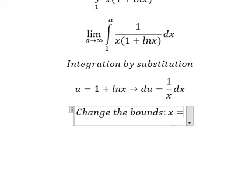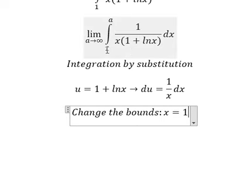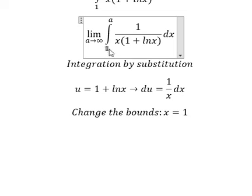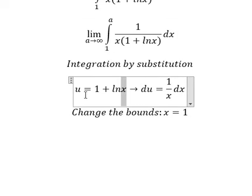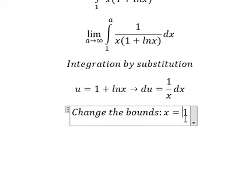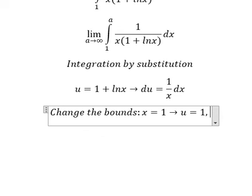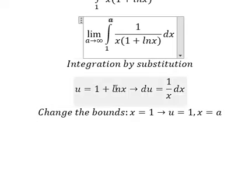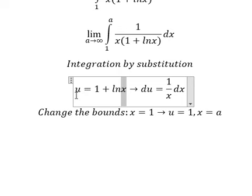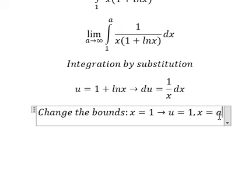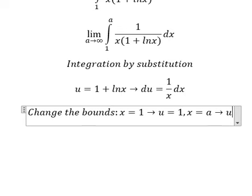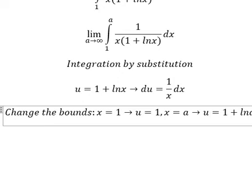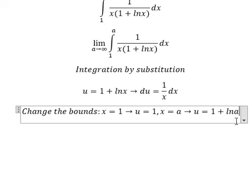When x equals 1, we put 1 in here and we get zero, so we can find that u equals 1. When x equals a, we put the value a in here and we can find the value of u, that is about 1 plus ln(a).